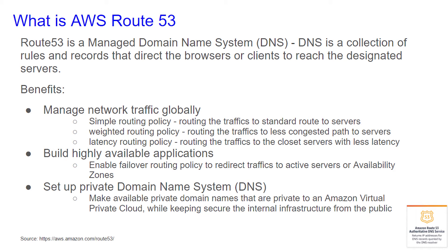It also allows you to build highly available applications. It enables failover routing policies to redirect traffic to active servers or availability zones. And also set up private domain name systems — make private domain names that are private to an Amazon Virtual Private Cloud, while keeping the secure internal infrastructure from the public.